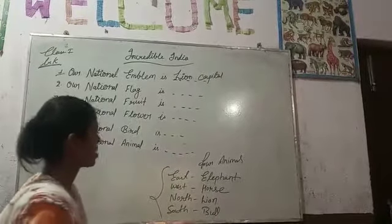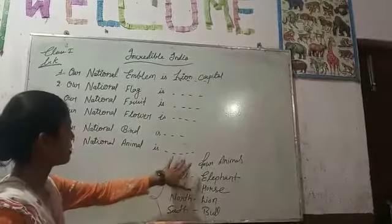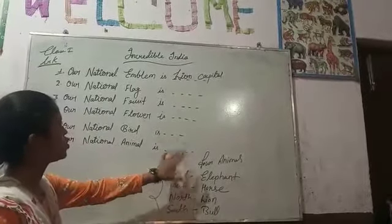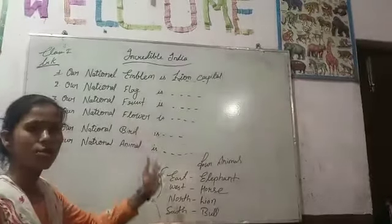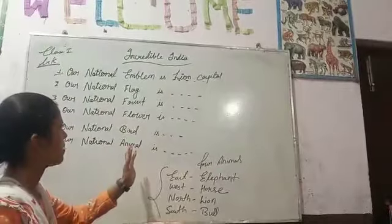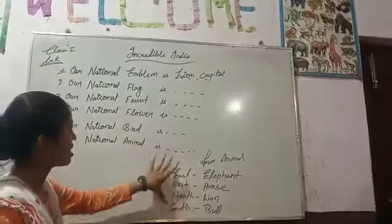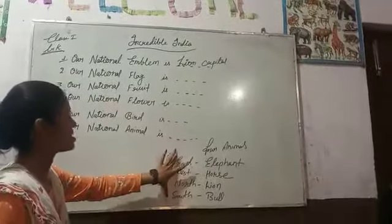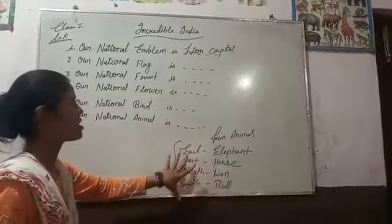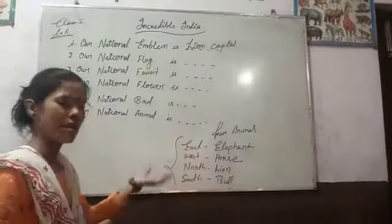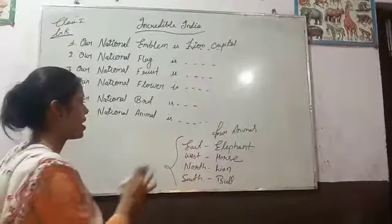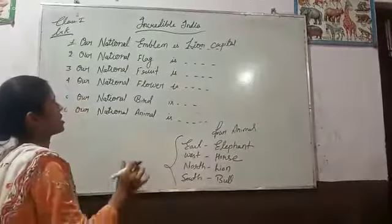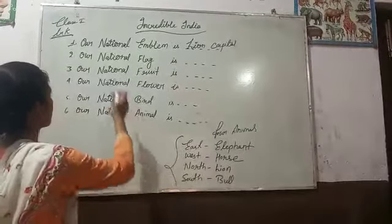This national emblem is a picture which has four animals. It's four animals — it's their picture, it's the symbol.